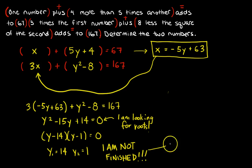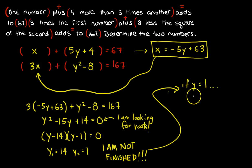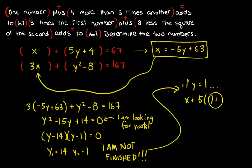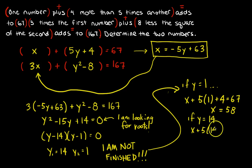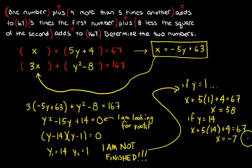If Y = 1, I pick the first equation: X + 5(1) + 4 = 67. That's 5 + 4 = 9, so X = 58, because it's 67 minus 9. And if Y = 14: X + 5(14) + 4 = 67, and X will be equal to −7.